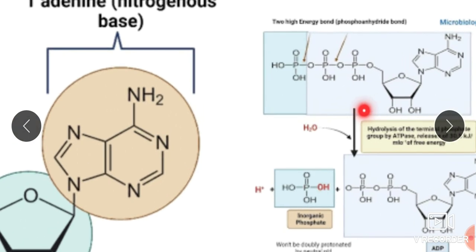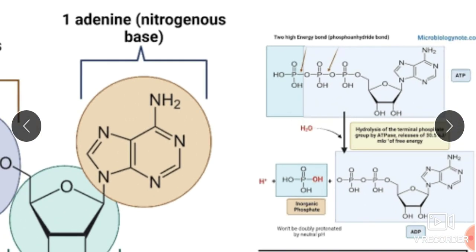Here is the structure of ATP. This is adenine, the nitrogen base. Here is the glycosidic bond between adenine and the ribose sugar. Here is the phosphodiester bond between adenosine and one phosphate molecule. The bonds represented by arrows in this image are phosphoanhydride bonds, and these two high-energy bonds indicate storage of a high amount of energy.